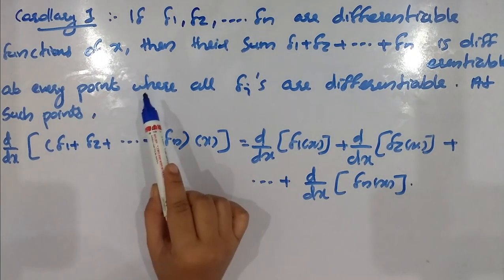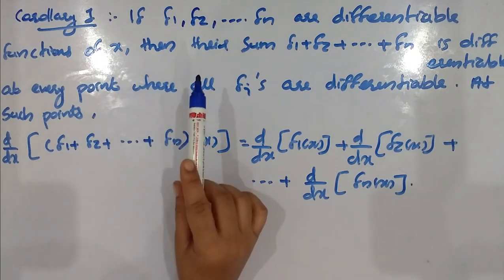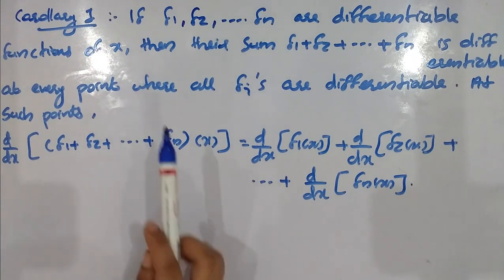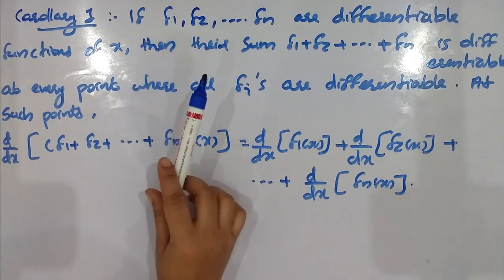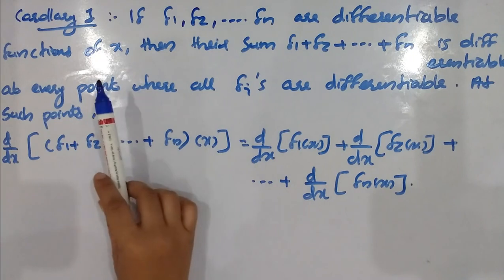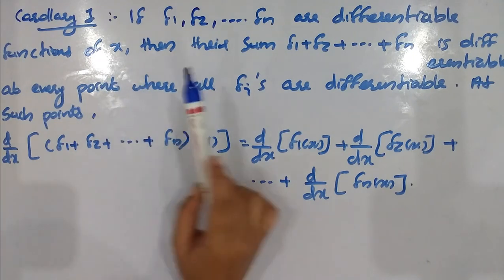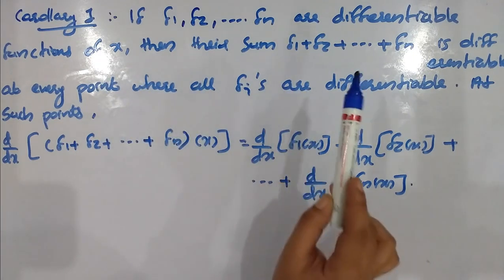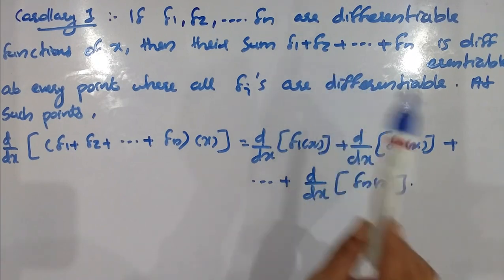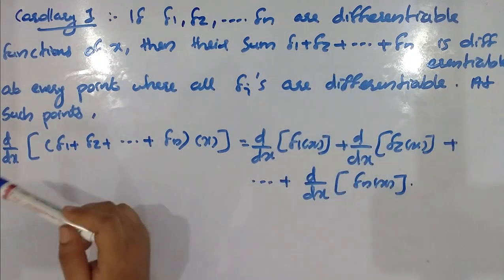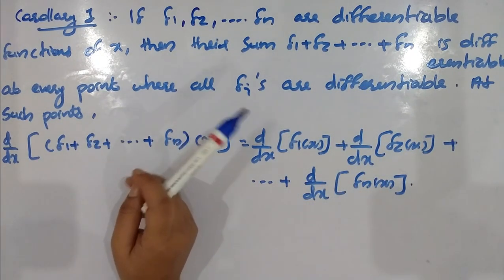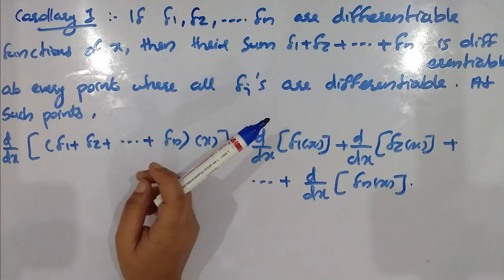First corollary: if f1, f2, etc., fn are differentiable functions of x, then their sum f1 plus f2 plus etc. plus fn is differentiable at every point where all fi's are differentiable.